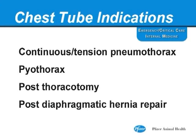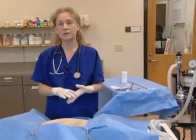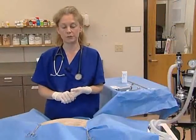Indications for chest tube placement include continuous pneumothorax or tension pneumothorax, pyothorax, and also post-thoracotomy or post-surgery for repair of a diaphragmatic hernia.